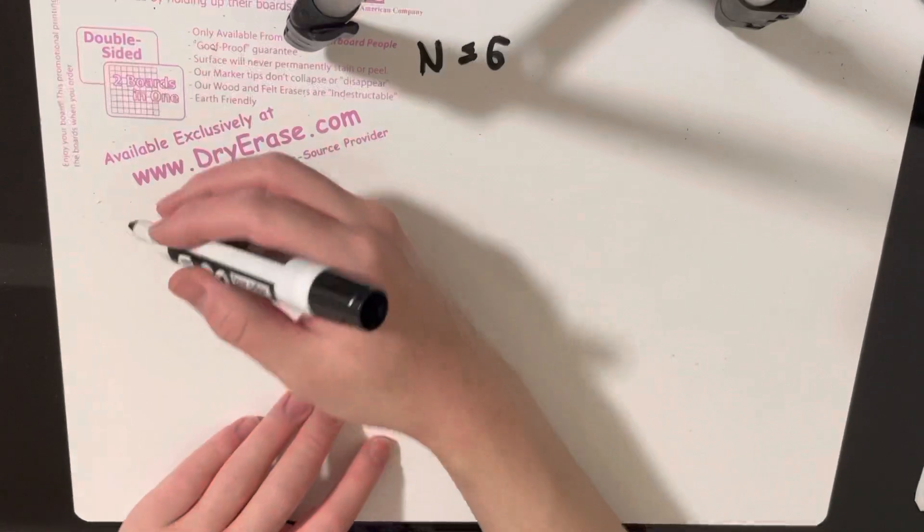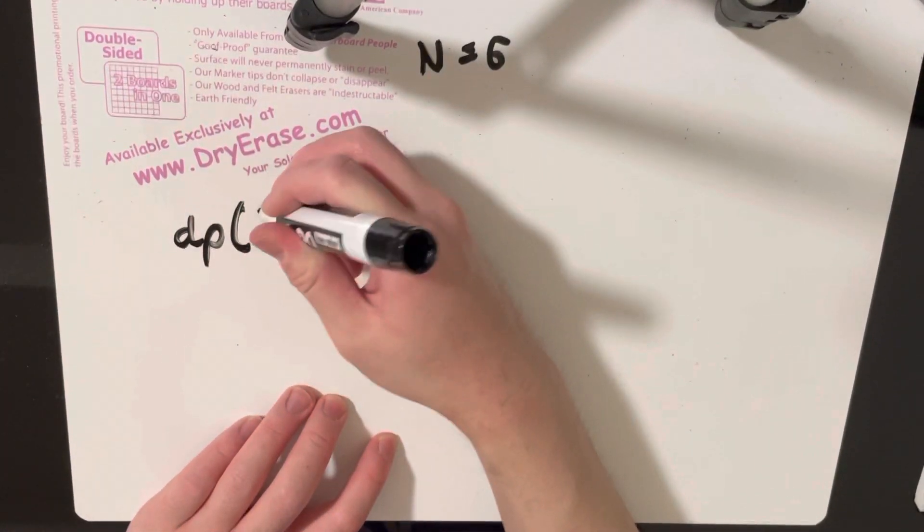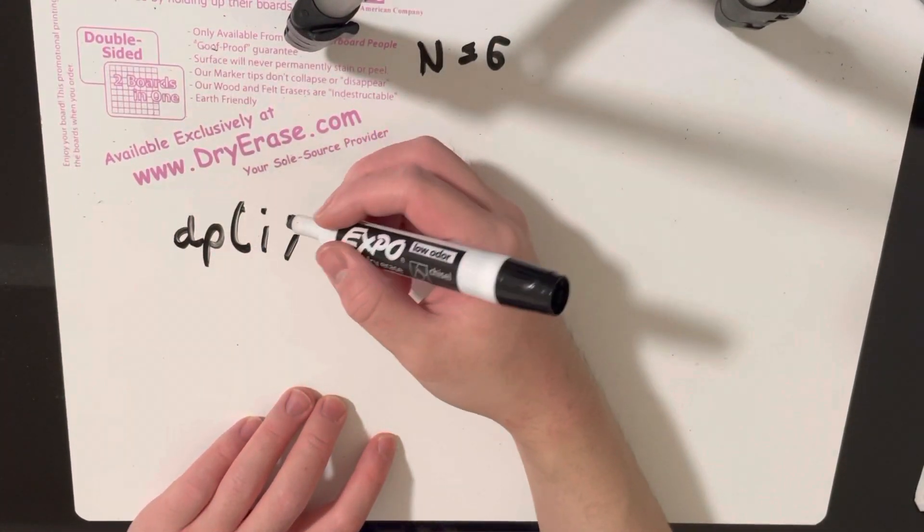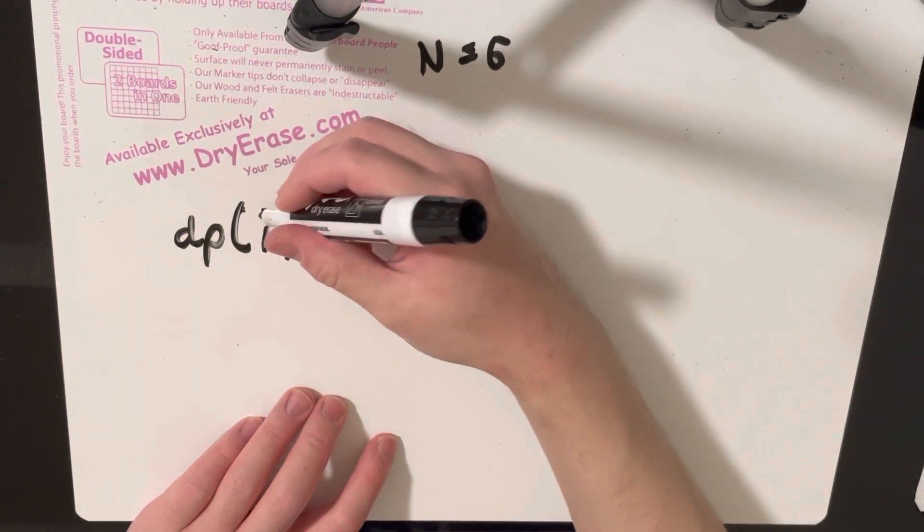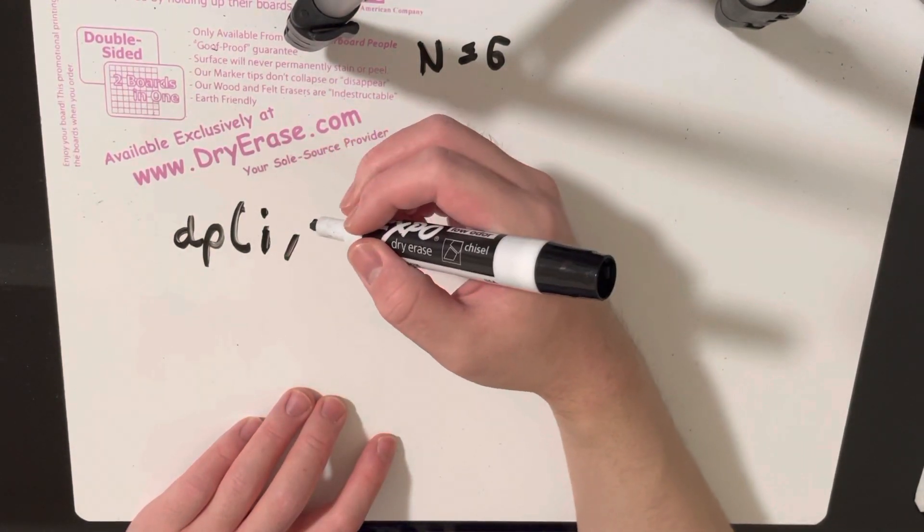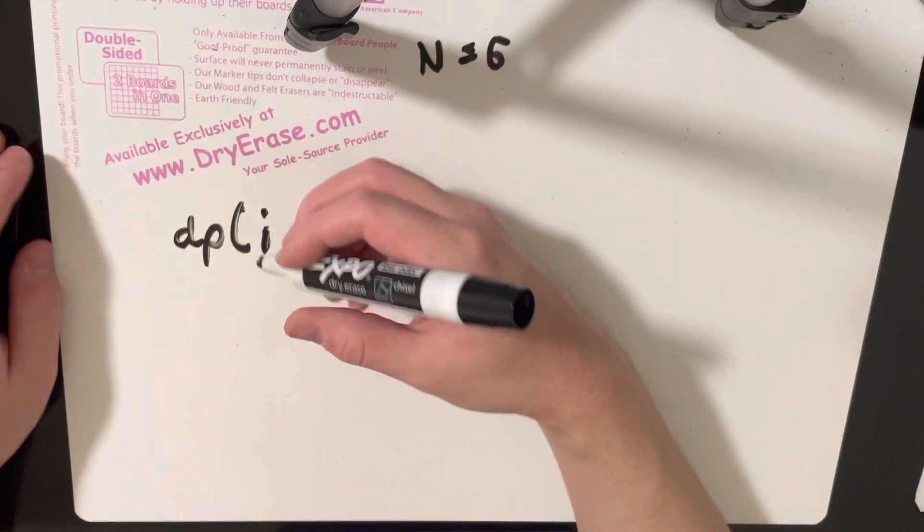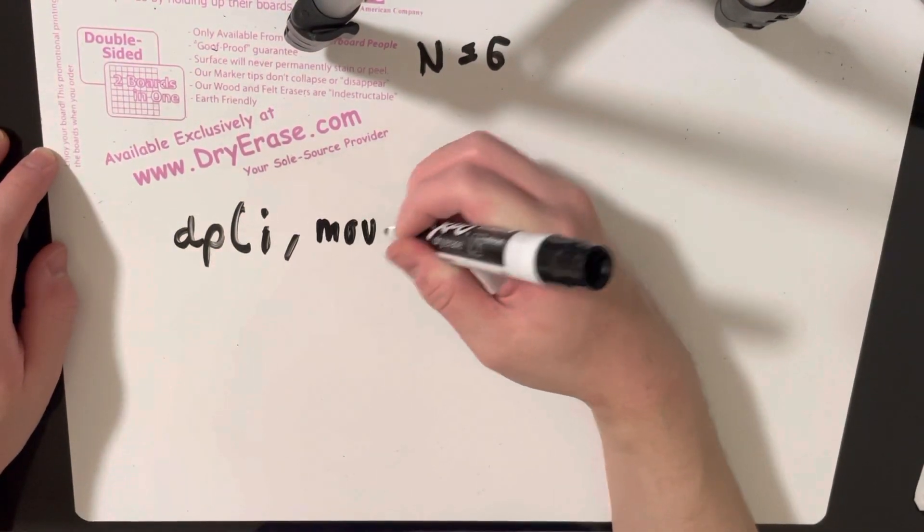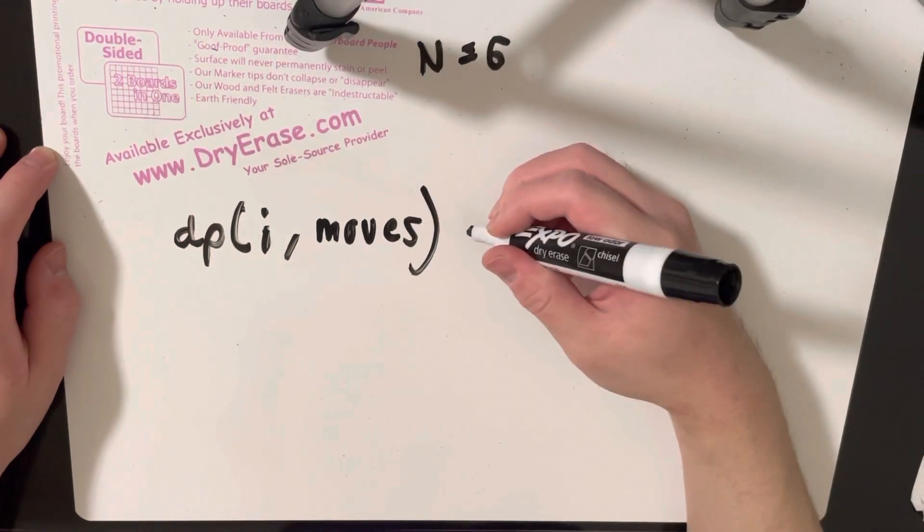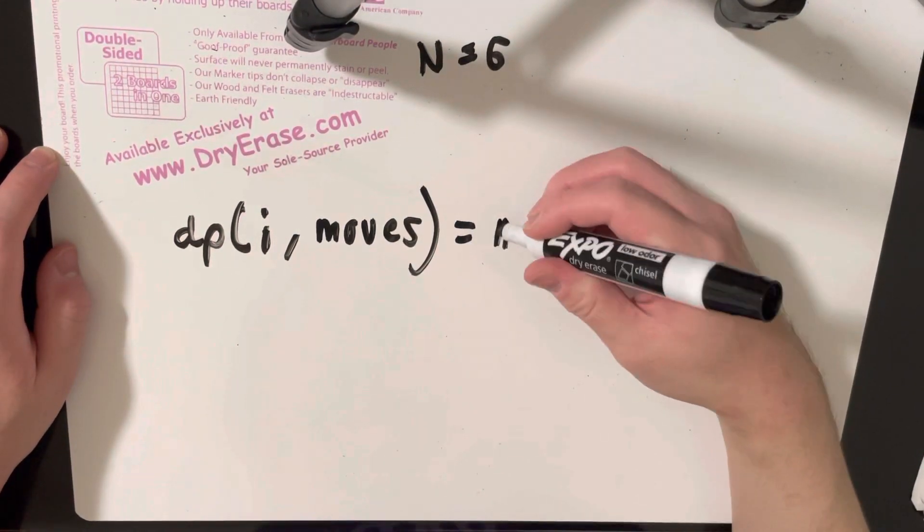So if we do something like DP at i, where i is a prefix that we're currently considering, and we do DP at i and then DP at moves, I'll call it moves.